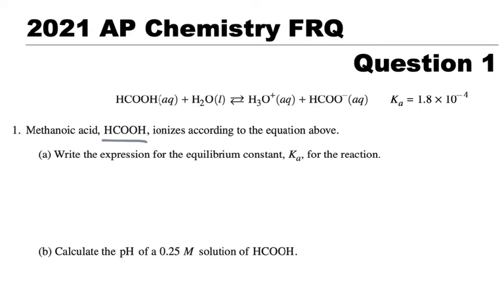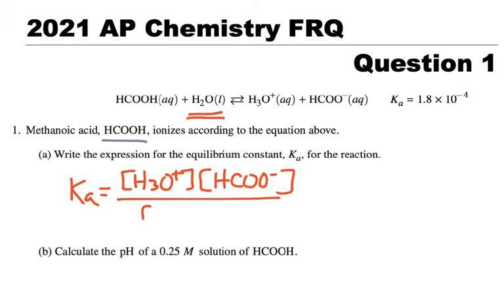First thing we want to do is write the expression for the equilibrium constant for this reaction. Looking at this reaction, we can see there is the acid plus water, liquid, H3O+, and HCOO-. The water is important because since it's a liquid, we're not going to include it in the Ka expression. So we're going to say Ka equals concentration of H3O+ times the concentration of HCOO- all over the concentration of the HCOOH.